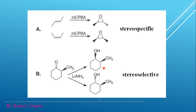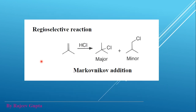In a stereoselective reaction, one isomer could form in major amount and the other in minor amount, but more than one stereoisomer will be formed. The third example is a regioselective reaction — Markovnikov addition — where two regioisomers or constitutional isomers are formed. According to Markovnikov's rule, the hydrogen atom adds to the doubly bonded carbon atom that has more hydrogen atoms, and the chlorine atom adds to the other carbon.